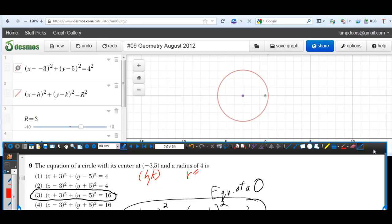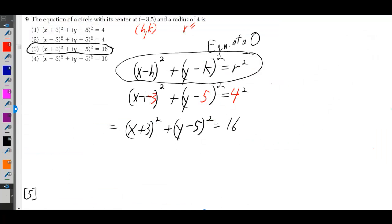We're going to graph this and look at the equation. The equation of a circle is always x minus h squared plus y minus k squared equals r squared, where h is the x coordinate of the center and k is the y coordinate of the center.